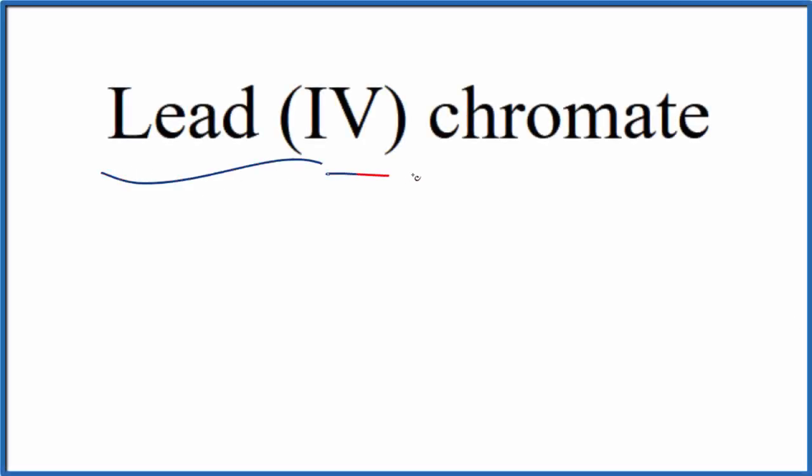To write the formula for lead (IV) chromate, let's first write the element symbol for lead, that's just Pb.